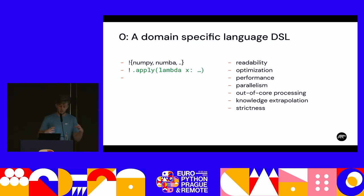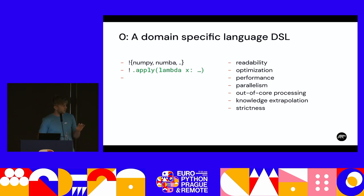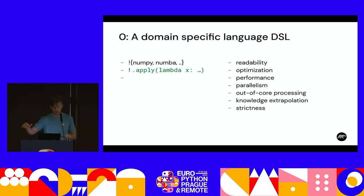We make a promise that if you use Polars as it's intended, you will get readable queries, optimization, performance, parallelism, out-of-core processing — which means larger-than-RAM data — and knowledge extrapolation. By that I mean in Polars you only need to learn a small part of the API, and we have an API that's composable. That knowledge you learn for that small part will be applicable in every part of the API.